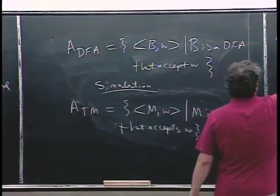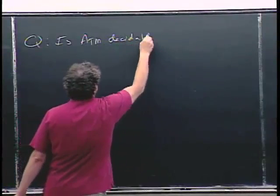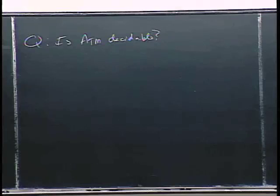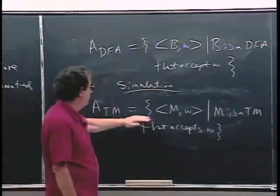The question is: is ATM decidable? Is there a Turing machine that can take in the description of some arbitrary other Turing machine M — this M isn't fixed, this is a whole infinite language — and an input, and then determine whether or not M accepts W? And is everybody clear on what the question is? It's just analogous to the DFA question, but now in terms of Turing machines.